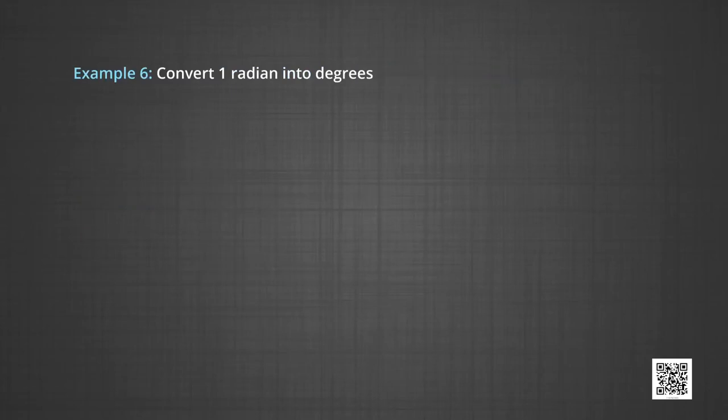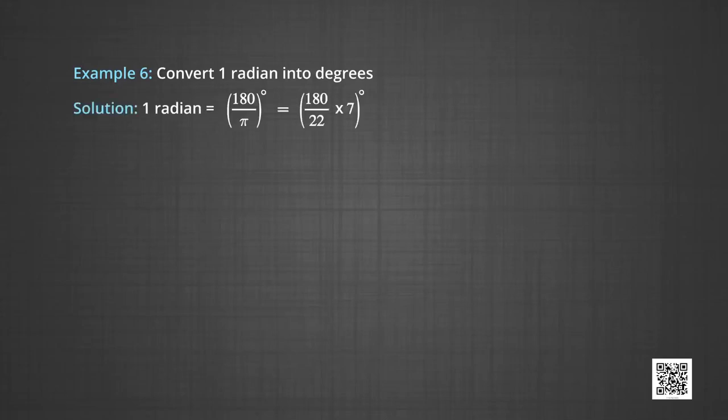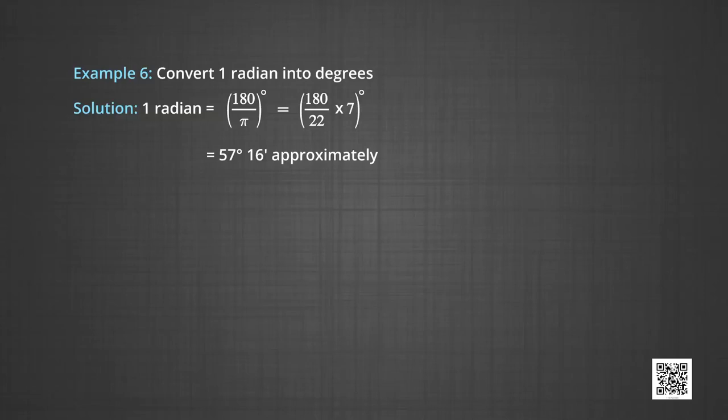In example 6, we will convert 1 radian into degrees. 1 radian is equal to 180/π degrees. We substitute π by its approximate value 22/7. On simplification, this gives us approximately 57 degrees 16 minutes.